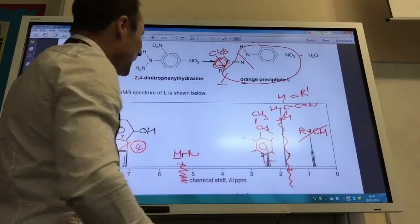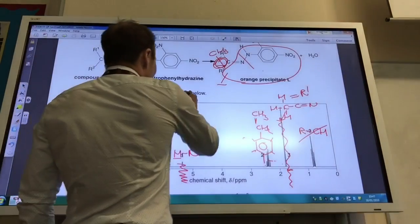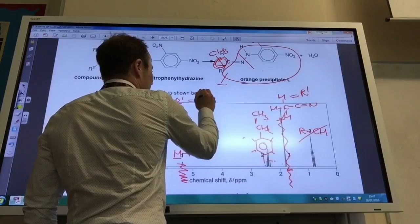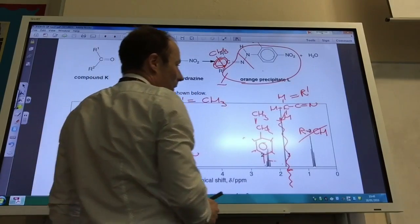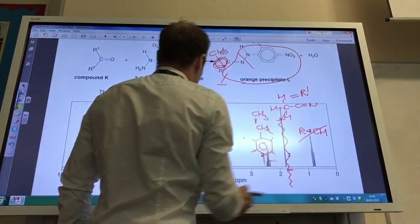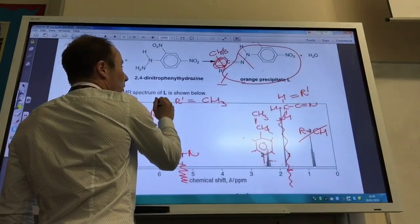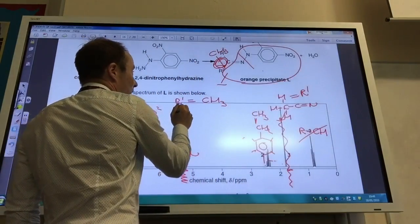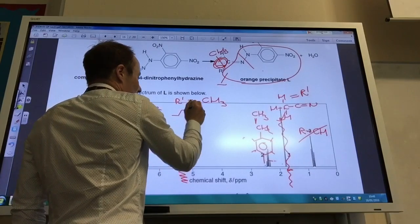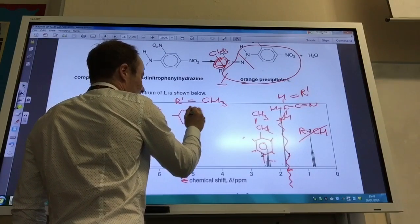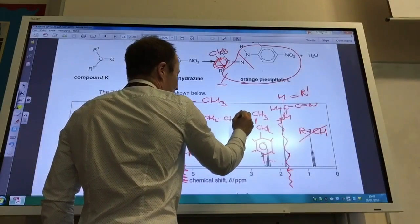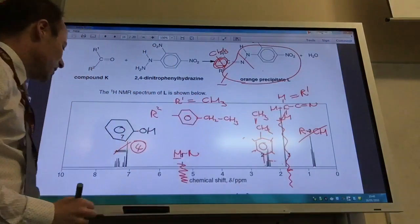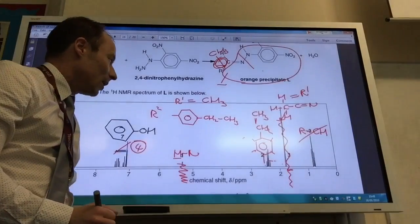So the main thing is to discount. So R1 is going to equal this CH3 group which is that boy there, and R2 is going to equal benzene ring CH2 CH3, like so.